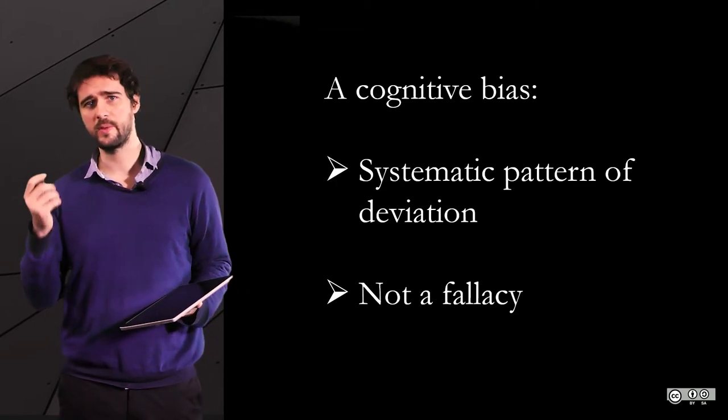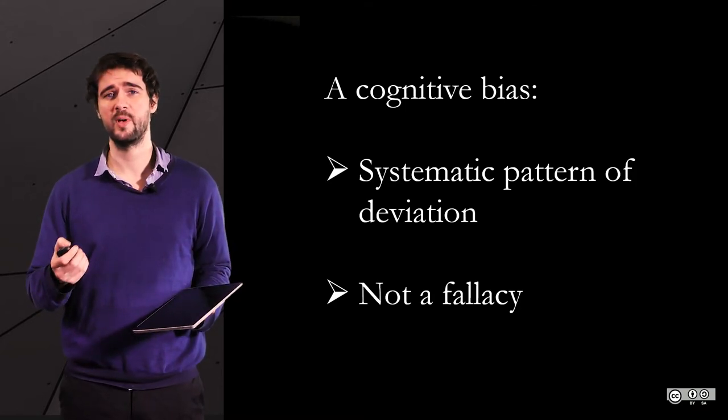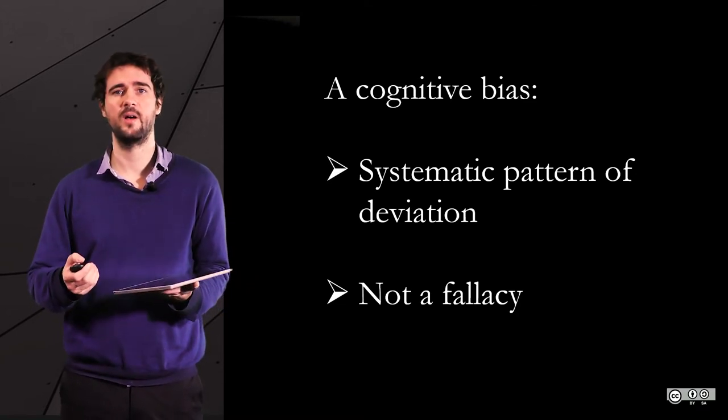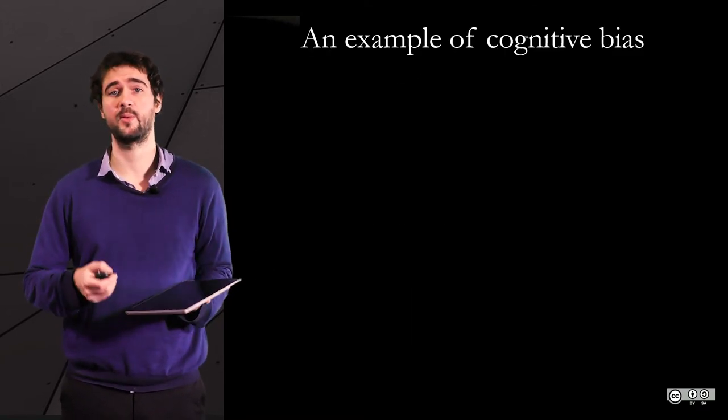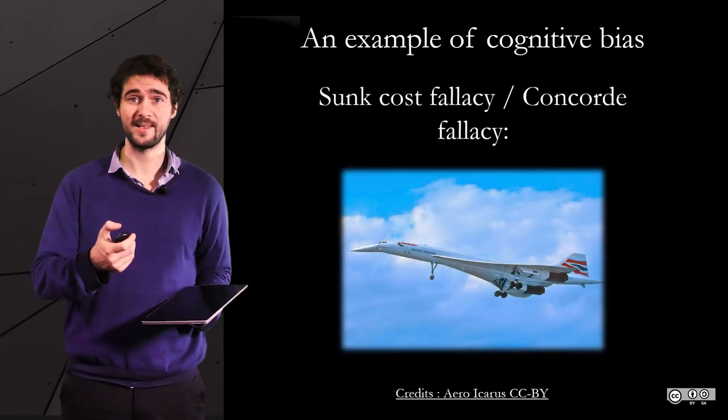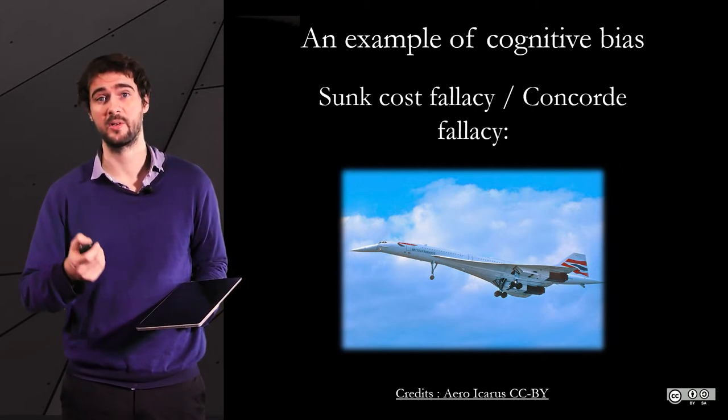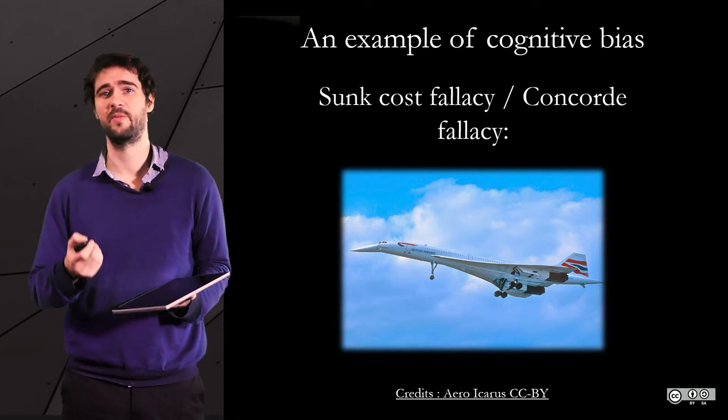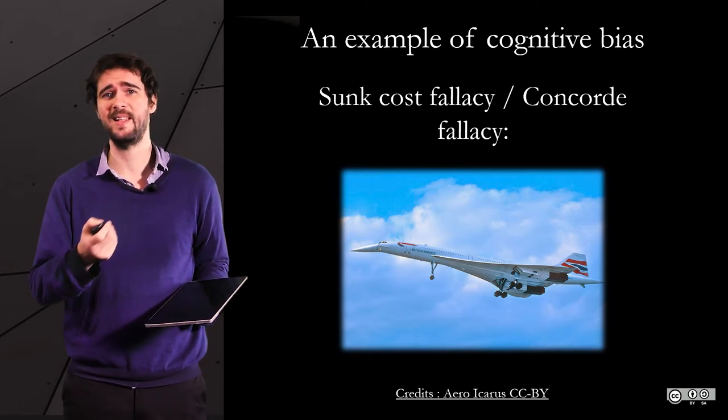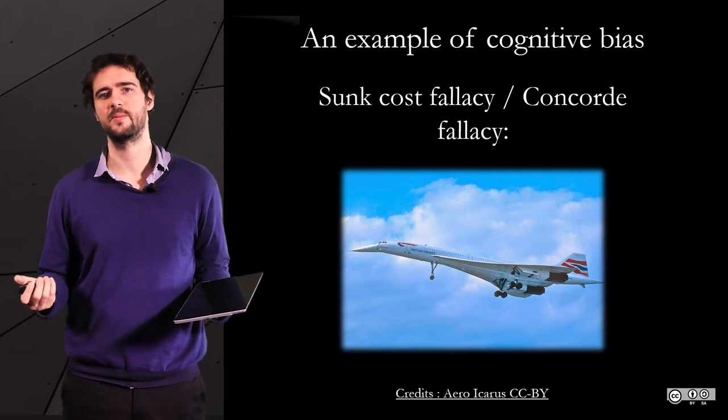It is all the more confusing because some cognitive biases are actually referred to as fallacies. The sunk cost fallacy is, for instance, another term that we use to designate a bias called the escalation of commitment, where past costs serve as irrational legitimization for future costs. It is also called the Concorde fallacy. The French and the British had invested so much in this plane that they felt like they could not drop the project and kept investing until they understood it was a mistake.